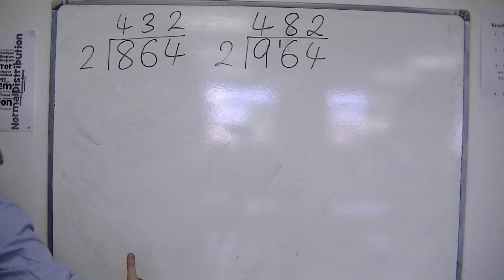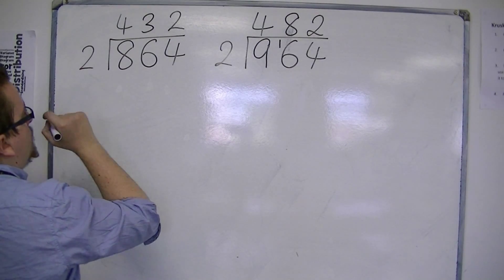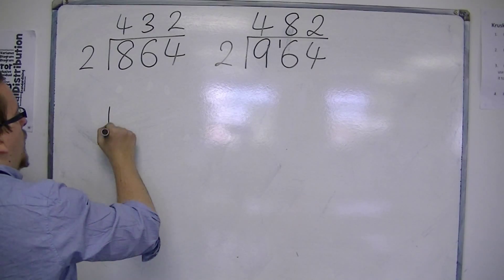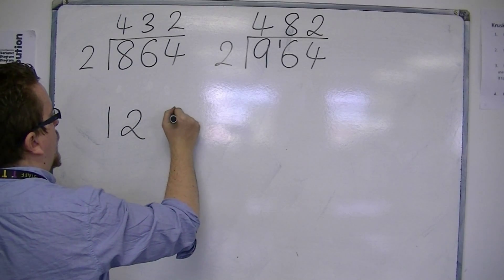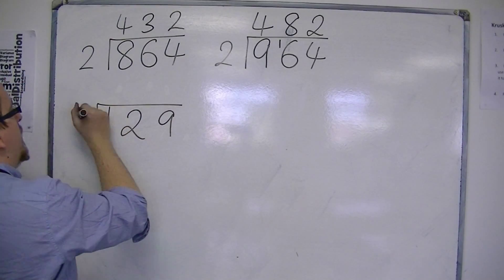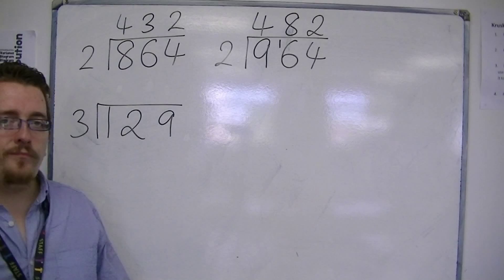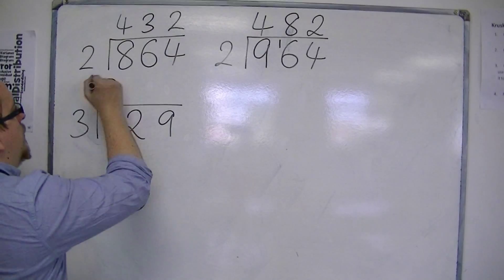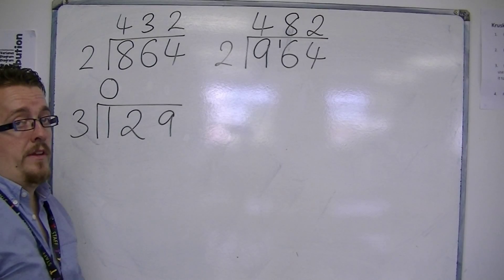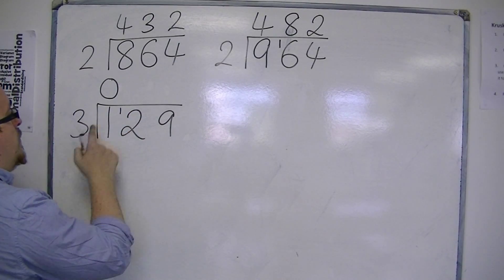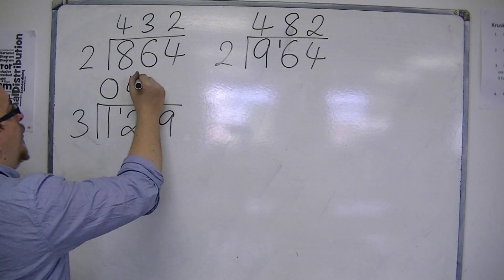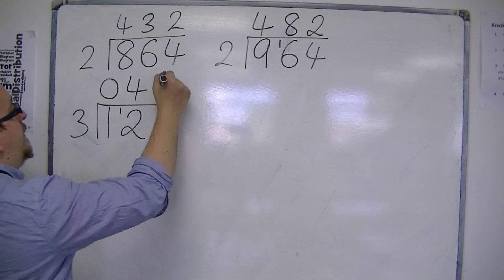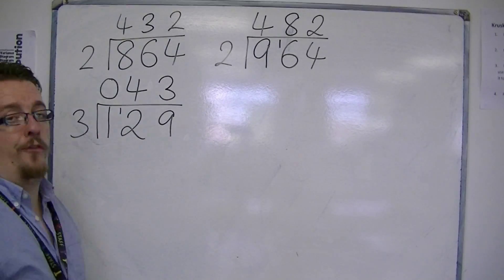Then let's have a go at something like 129 divided by 3. 3's into 1, I can't do. So 0, 3's go into 1, remainder 1. 3's into 12 go 4, and 3's into 9 go 3. So the answer's 43.